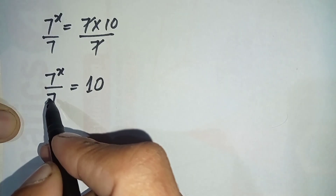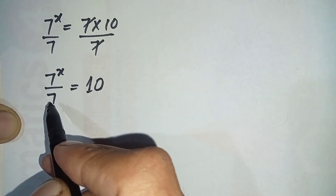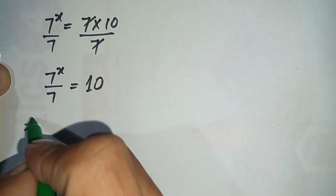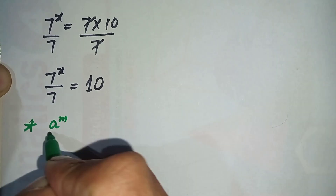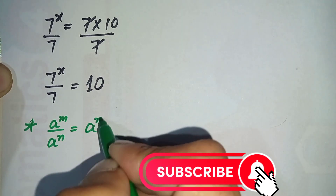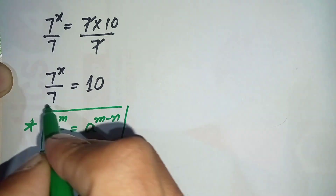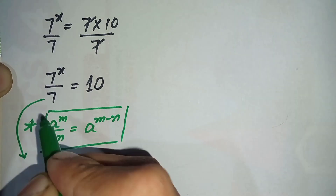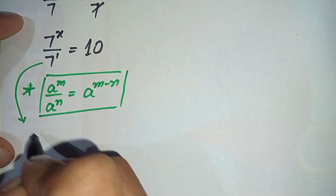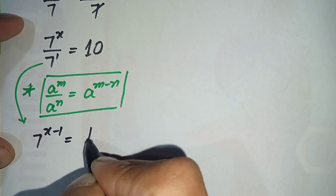Now on the left hand side we will use the same base formula, because in the numerator and denominator both the bases are same. The same base formula is: a to the power m divided by a to the power n is equal to a to the power m minus n. By using this formula, since the power of 7 in the denominator is 1, the left hand side becomes 7 raised to the power x minus 1 is equal to 10.